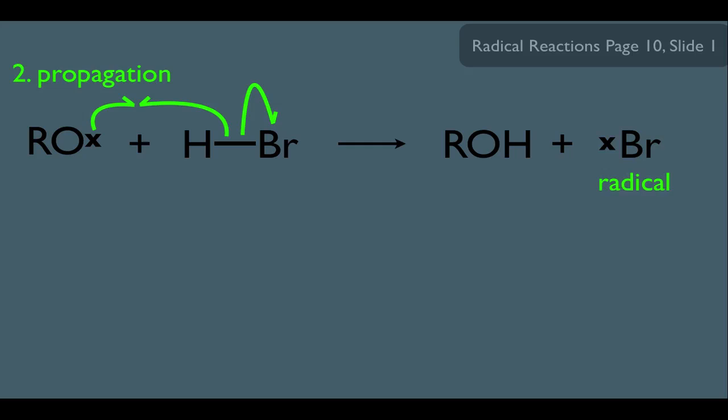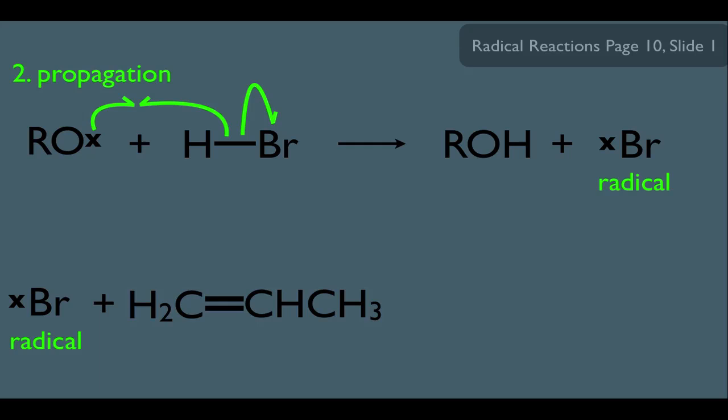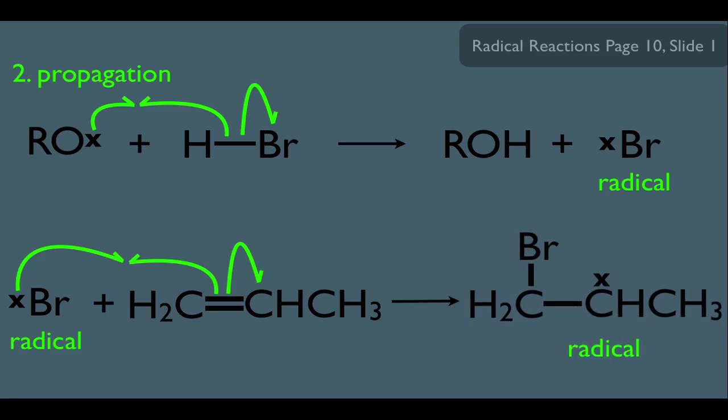Notice the characteristics here — we're starting with a radical and ending with a different radical. It is then this Br radical that reacts with the alkene. One of the electrons in the pi bond meets up with the electron in the Br, and the other electron in the pi bond jumps up onto the second carbon. This makes sense because the radical has to form on the secondary carbon instead of the primary carbon — secondary radicals are more stable than primary radicals. This propagation step explains why this reaction is anti-Markovnikov.